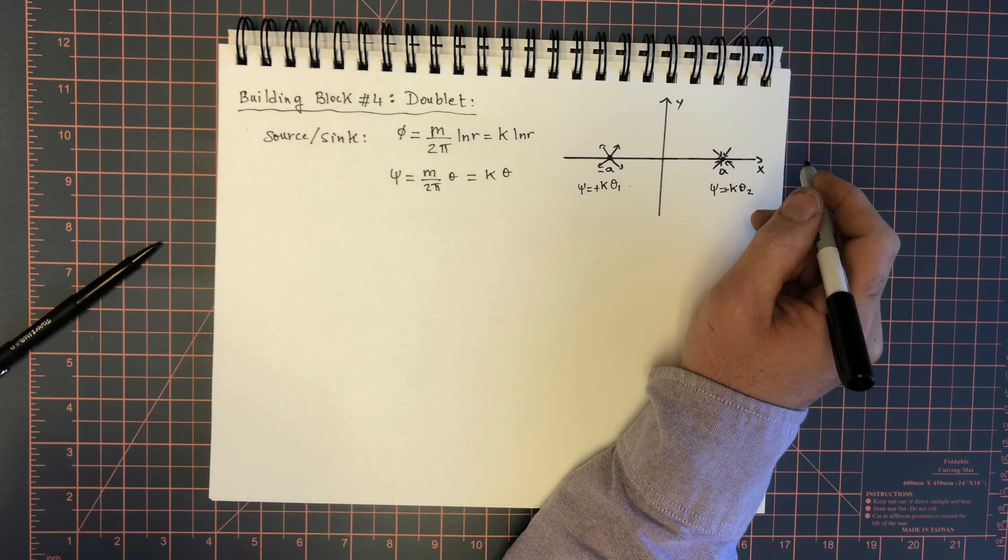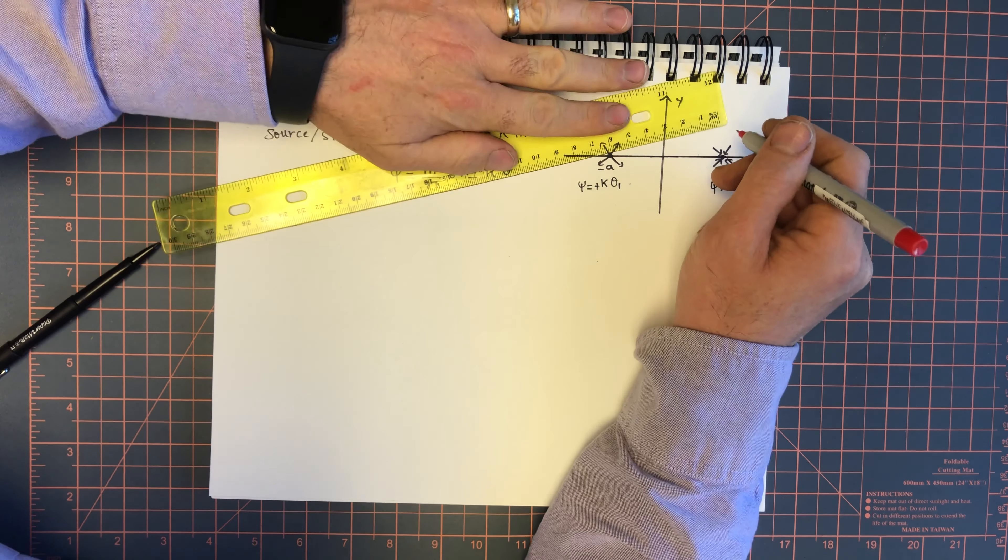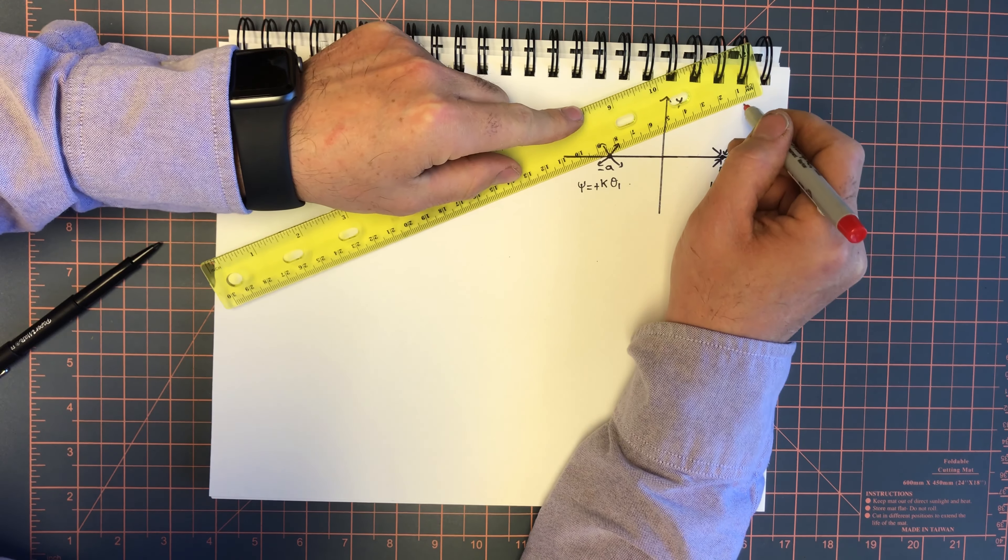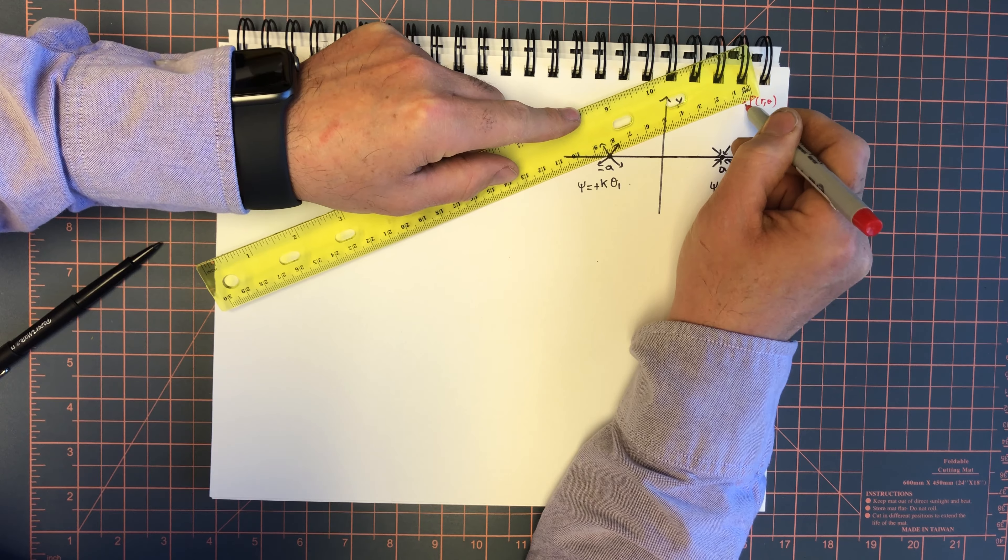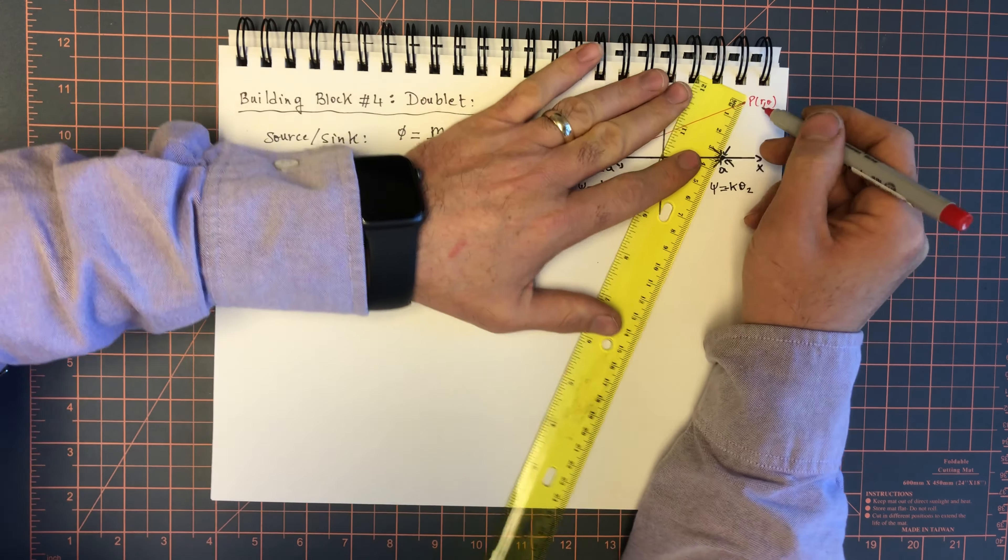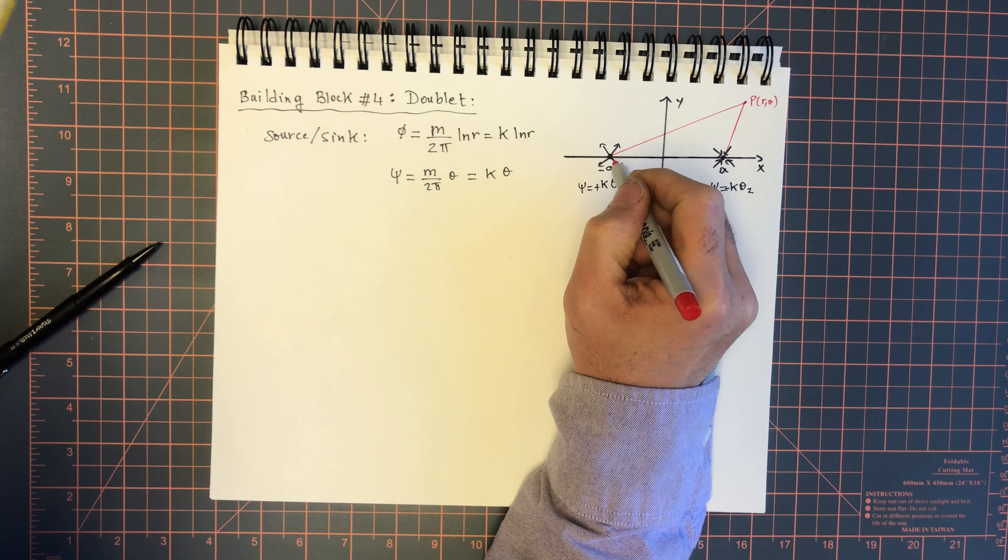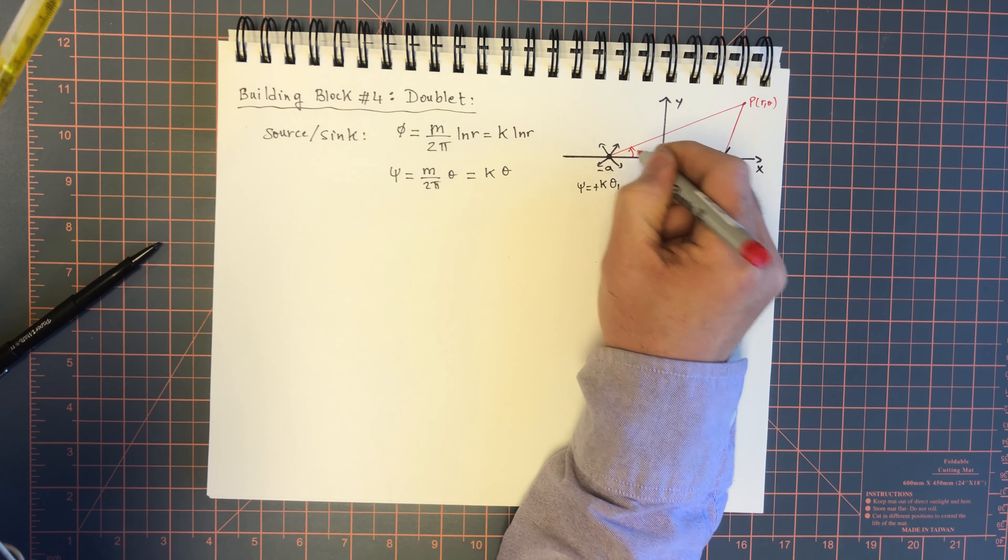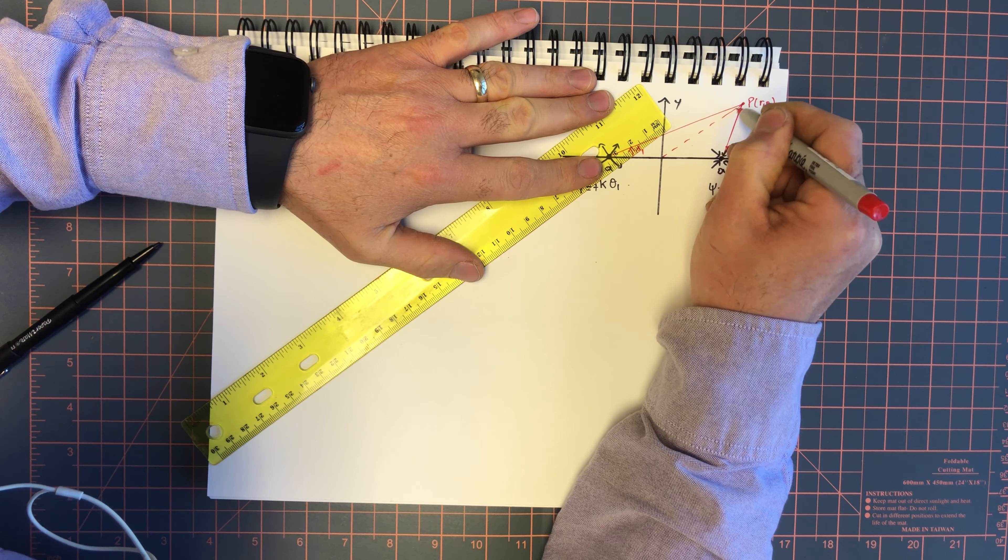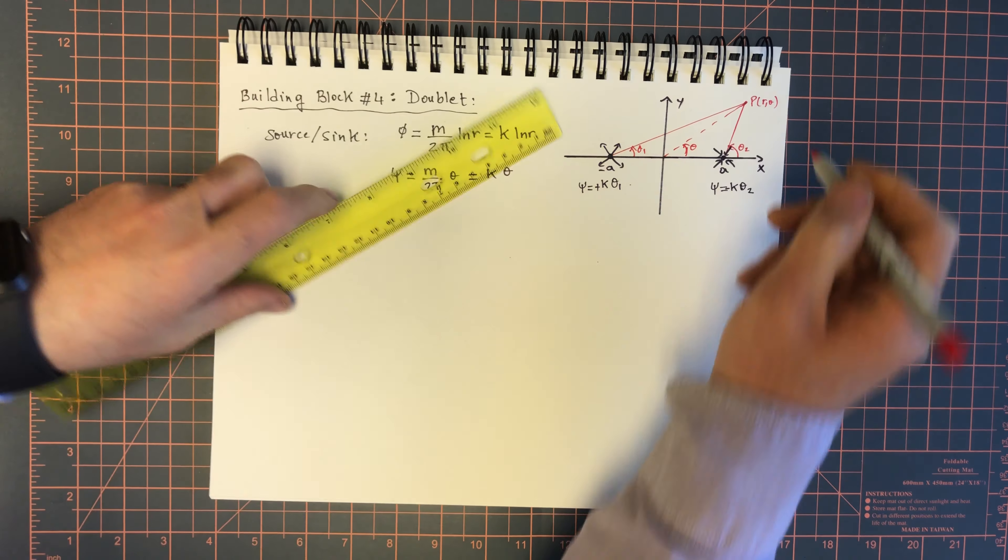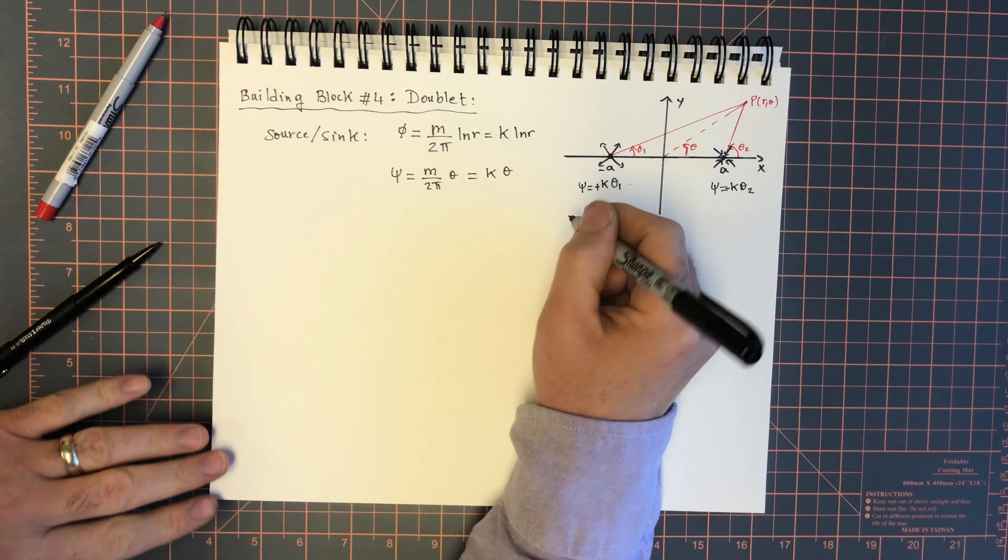What are theta 1 and theta 2? If you remember my previous videos, they're just the angles. At any point p or theta, theta 1 is the angle made by the source and the line directly to p. And this would be theta 2 and this line through the origin is theta for the coordinates.